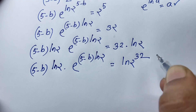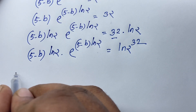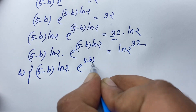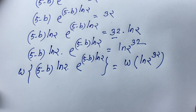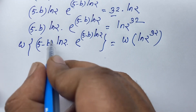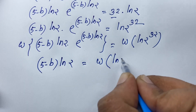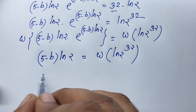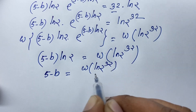Now at this point I apply the Lambert W function to both sides. The left side has the form a·e^a where a = (5 minus b)·ln 2, so by the Lambert W definition W(a·e^a) = a. Therefore: (5 minus b) times ln 2 is equal to W(ln 2 to the power 32). Dividing both sides by ln 2 gives: 5 minus b equals W(ln(2^32)) over ln 2.